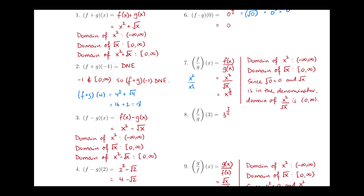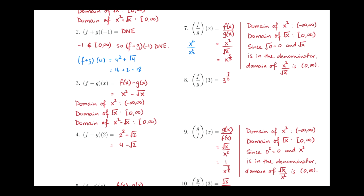And, f over g of 3 is basically just f over g of x with x replaced with 3. So, instead of x there, I just replaced it with a 3, and I got 3 to the 3 halves. So, computations are easy. The domains tend to be the little sticky ones.